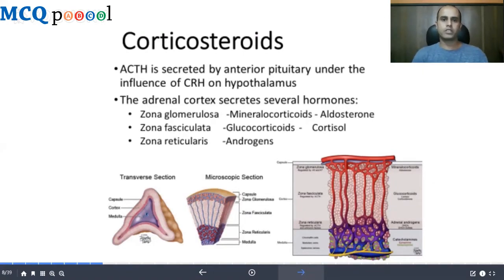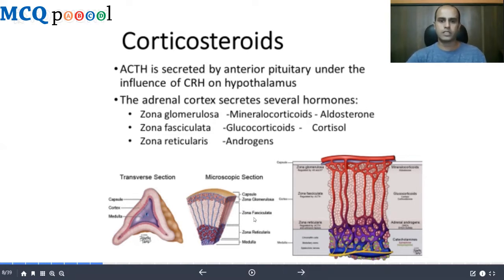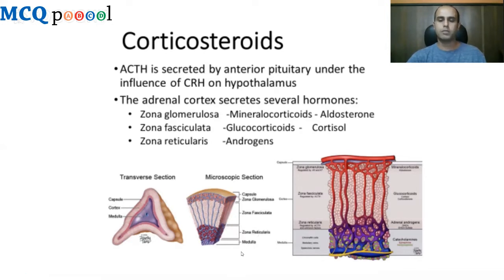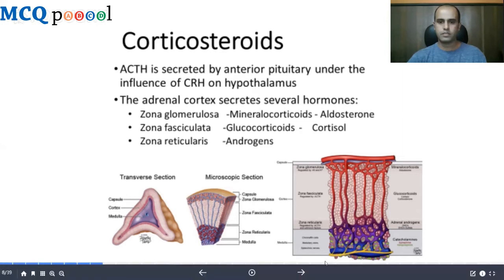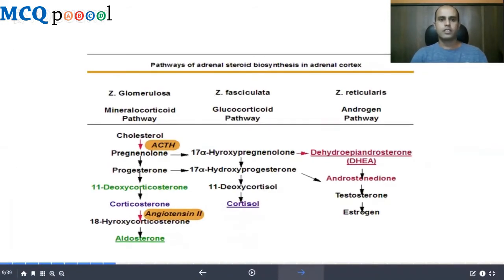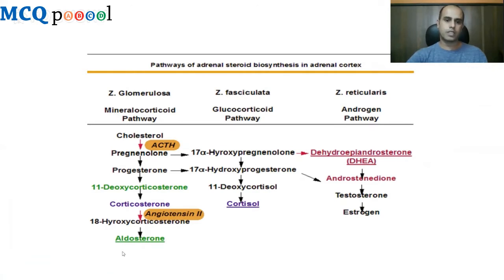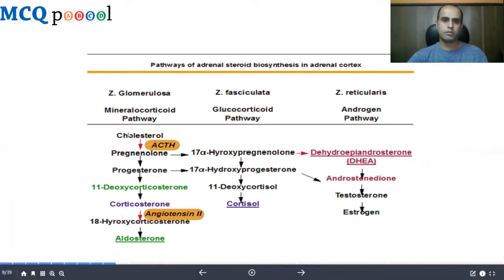ACTH is secreted by the anterior pituitary under the influence of corticotropin-releasing hormone from the hypothalamus. The adrenal cortex secretes several hormones: zona glomerulosa secretes mineralocorticoids or aldosterone, zona fasciculata secretes glucocorticoids or cortisol, and zona reticularis secretes androgens or sex hormones. Biochemically, zona glomerulosa secretes aldosterone, zona fasciculata prepares and secretes cortisol, and zona reticularis secretes estrogen and testosterone, all starting from the cholesterol molecule.